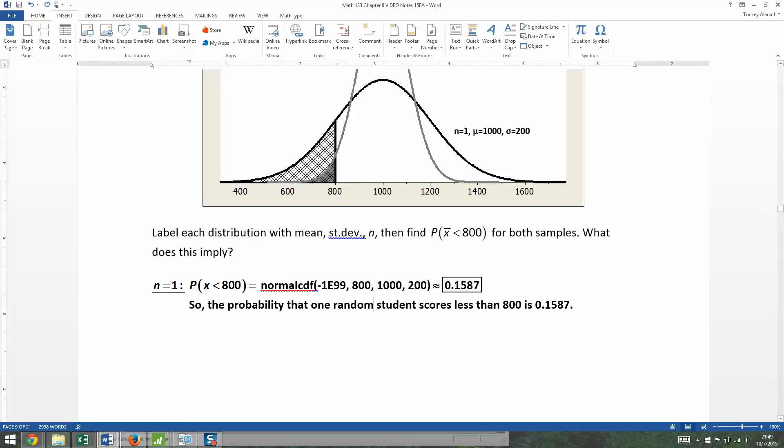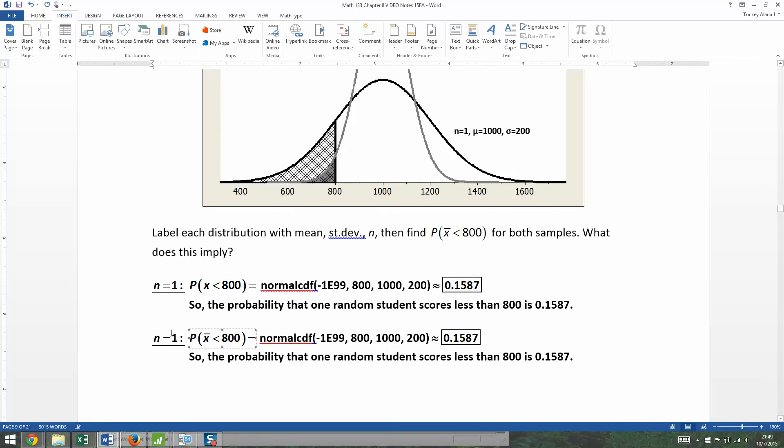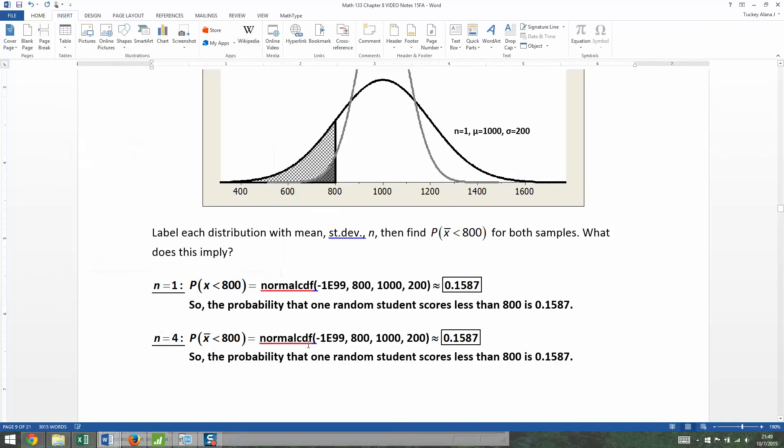What about four students, though? It's the same idea, except with four students, it's going to be an X bar, not an X. X is individuals. We're going to have X bar right here. So when it's X bar, what's going to change? The negative 1 E 99 doesn't change. The 800 doesn't change. But what does change is this 200 right here. It becomes 100.